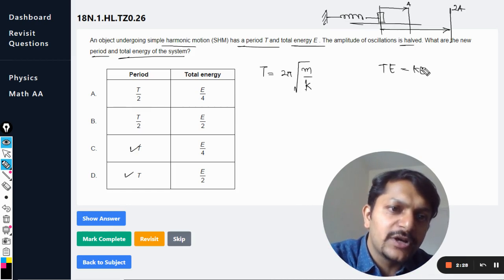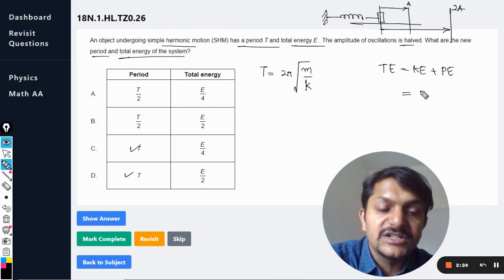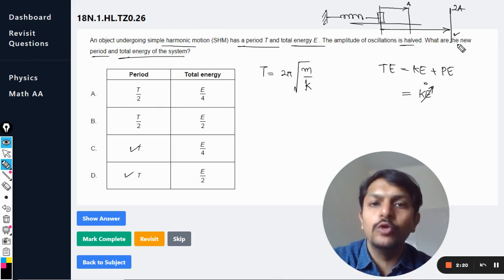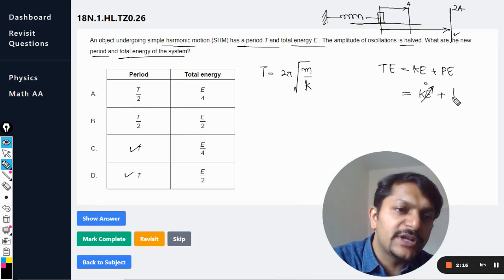But at extreme positions, kinetic energy is zero. At this position the body is not moving, so it becomes zero and only the potential energy is there.